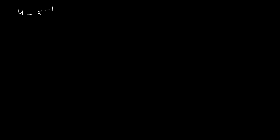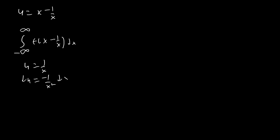Let's take the most basic form where u is just x minus 1 over x, and show how this works. We have the integral from negative infinity to infinity of f(x minus 1/x) dx. We substitute u equals 1 over x, so du equals negative 1 over x squared dx, or equivalently dx equals negative 1 over u squared du. This allows us to end up with the integral from negative infinity to infinity of f(1/u minus u) times 1 over u squared du.